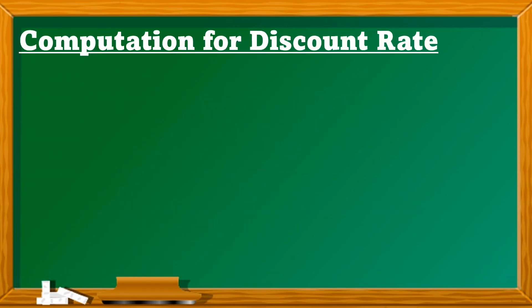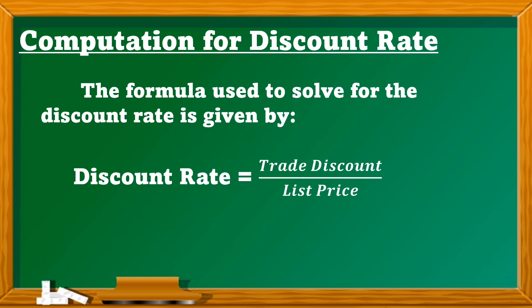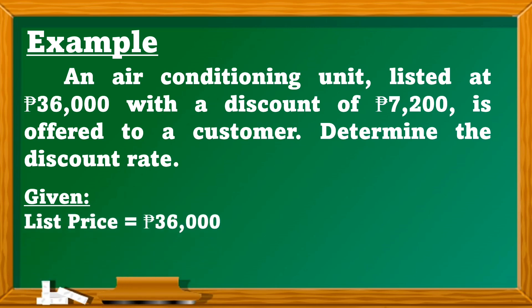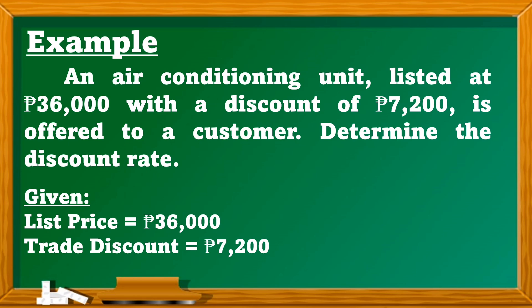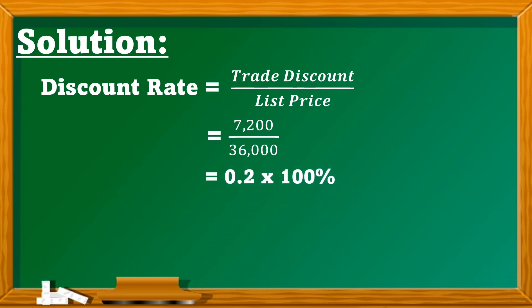How to compute for the discount rate. The formula is: Discount rate = Trade discount ÷ List price. Example: An air conditioning unit listed at 36,000 pesos with a discount of 7,200 pesos is offered to a customer. Determine the discount rate. Solution: 7,200 ÷ 36,000 = 0.2 × 100% = 20%.